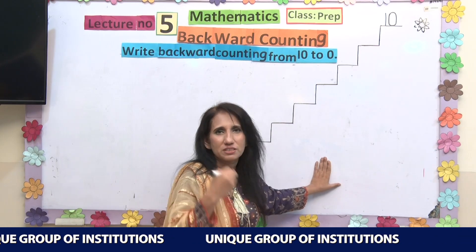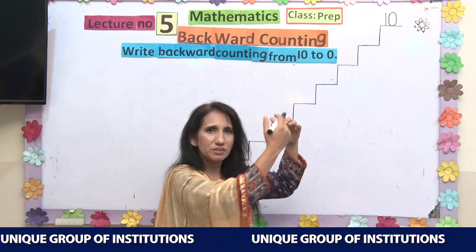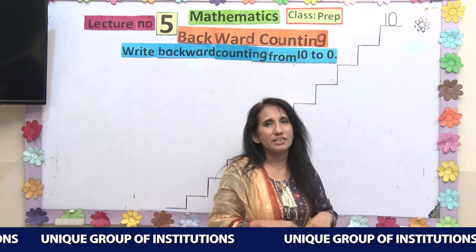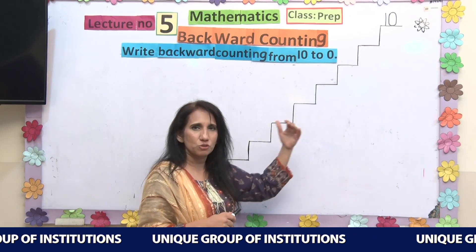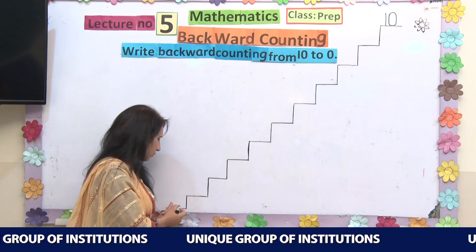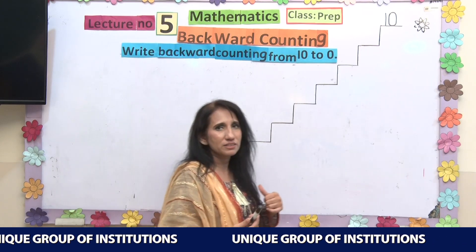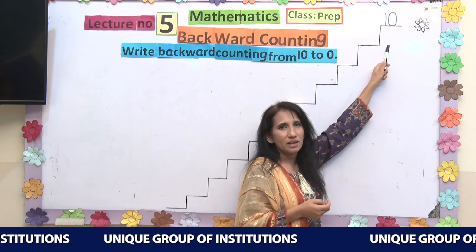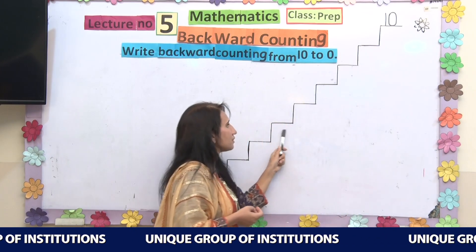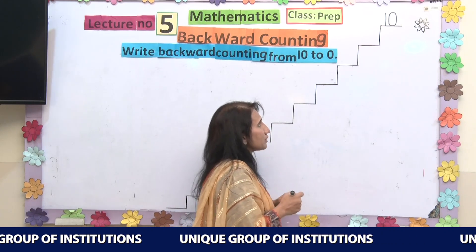For example, we start from where the number is at the top and come down. I have written 10 over here. It means that I am coming down from 10 to 0. I am not writing from the bottom step — that is my ending step. My starting step is 10, and I am moving down step by step. This is how we write our backward counting. So let's start writing.